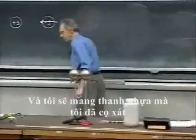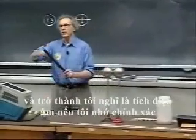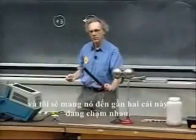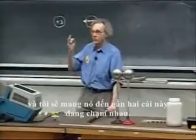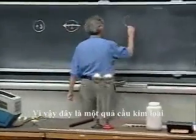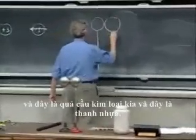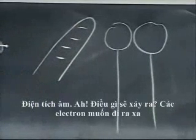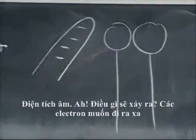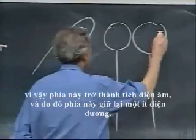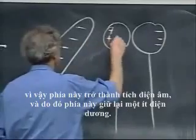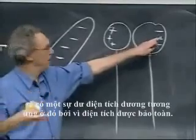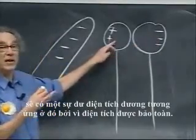I'm going to bring this rubber rod, which I will rub and which becomes negatively charged. I will bring it close to these two spheres, which are touching each other. What's going to happen? The electrons want to go away, so this sphere becomes negatively charged, and therefore this one remains a little bit positively charged. For every one electron that has excess here — when I start it's neutral — there will be a positive excess there, because charge is conserved. You can't create charge out of nothing.